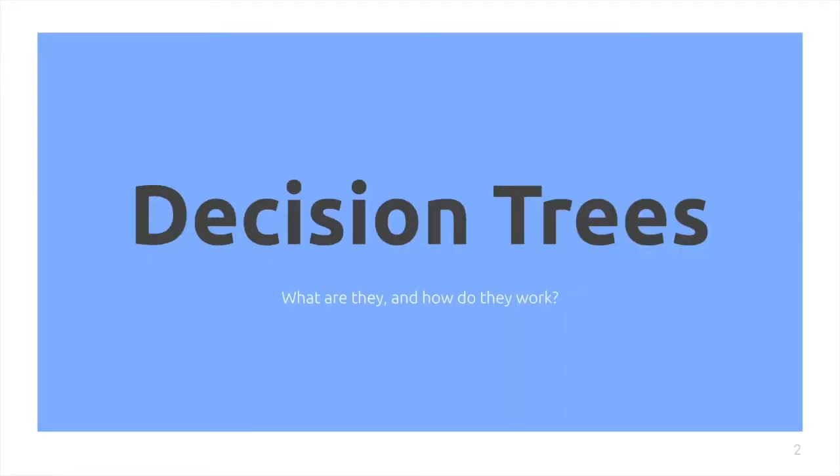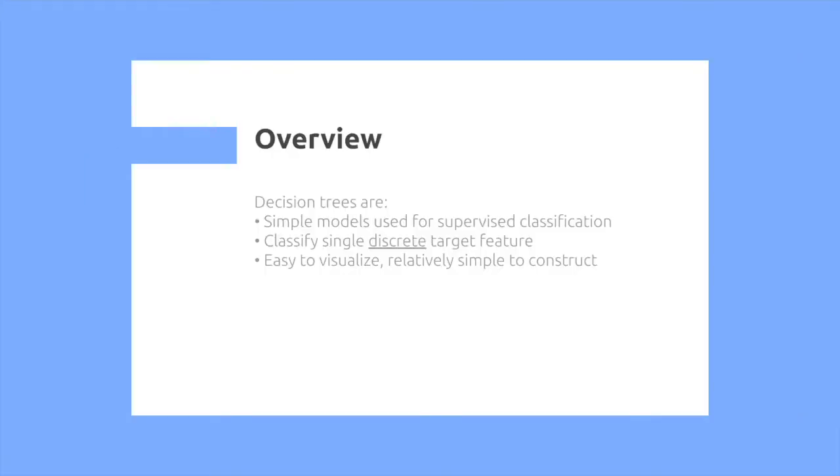Decision trees. What are they and how do they work? Decision trees are simple models used for supervised classification. We can classify single discrete target features. They're easy to visualize and relatively simple to construct.